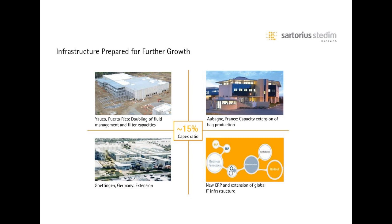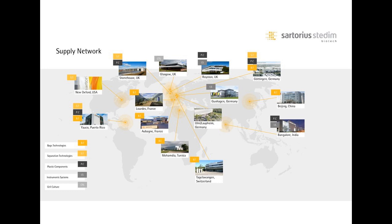Sartorius Stedim is preparing for the future, investing in infrastructure in all regions to increase its global footprint worldwide, as well as in a modern ERP system with a global solution. Within Global Supply Chain, a dedicated team of project managers is in charge of leading all projects related to dual manufacturing, capacity deployment, and vertical integration. As you can see, Sartorius' operation network covers almost all worldwide regions. Our global and local supply chain teams are focused on providing a best-in-class service level to our customers.